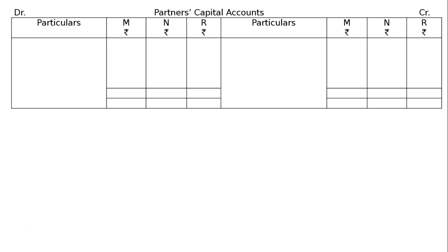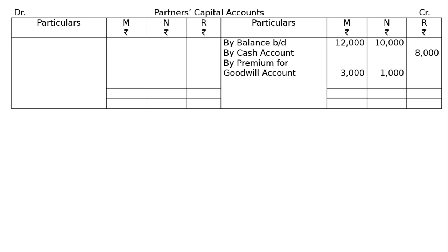Now the capital accounts of M and N. After drawing the format, the opening capital balances — balance brought down — are Rs. 12,000 and Rs. 10,000. By cash account, the new partner R is bringing in Rs. 8,000 as capital and Rs. 4,000 as his share of goodwill. By premium for goodwill account Rs. 4,000 is distributed in the sacrificing ratio — Rs. 3,000 to M and Rs. 1,000 to N. By revaluation account: M gets Rs. 1,250 and N gets Rs. 750.